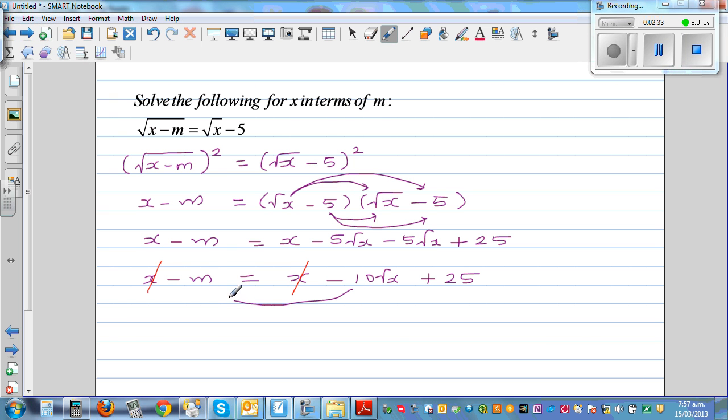So let's isolate the x on one side. So this I'm going to bring to this side and this I'm going to bring on this side. Or you're adding 10√x to both sides and adding m to both sides. So this will become 10√x = m + 25.